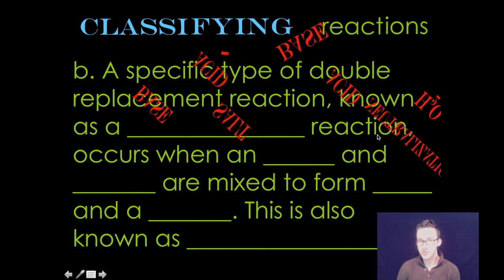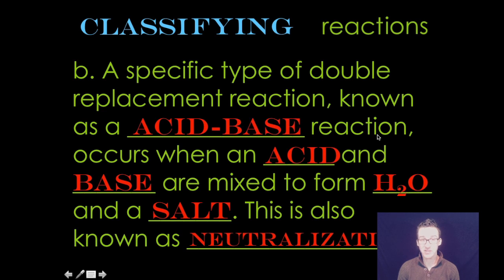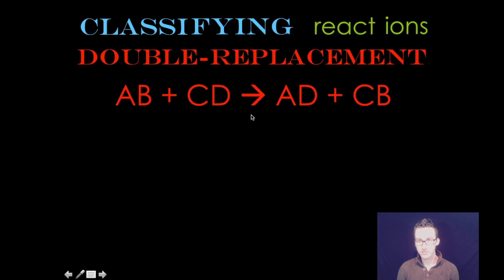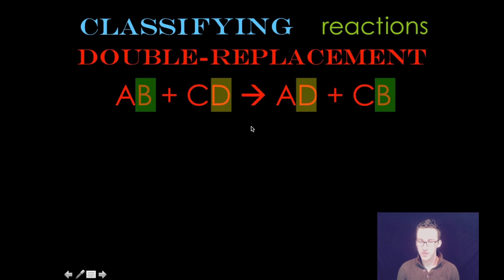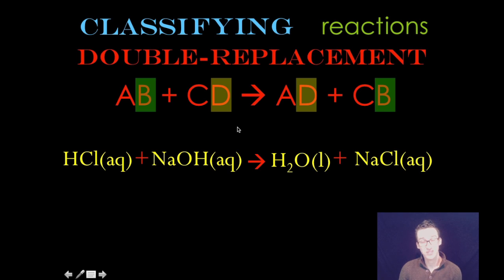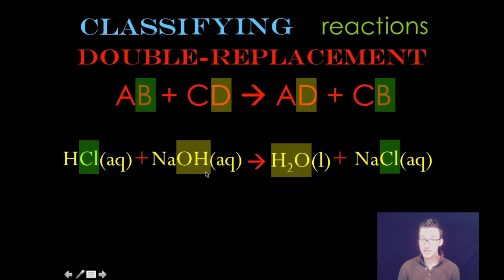A second specific type of double replacement reaction is known as an acid-base reaction. And this occurs when an acid and base are mixed to form water and a salt. This is also known as neutralization. Now we'll talk a lot more about this type of reaction when we discuss acids and bases. But what you're going to be looking for in an acid-base neutralization reaction is the formation of water and a salt. But notice again here we have a double replacement. We have essentially a switching of the partners here, a switching of the hats. Additionally, keep in mind we're forming a salt in an acid-base neutralization reaction. It doesn't always have to be sodium chloride as we'll learn.